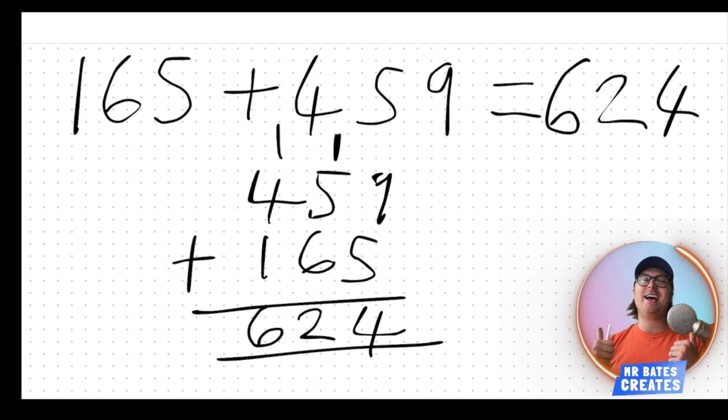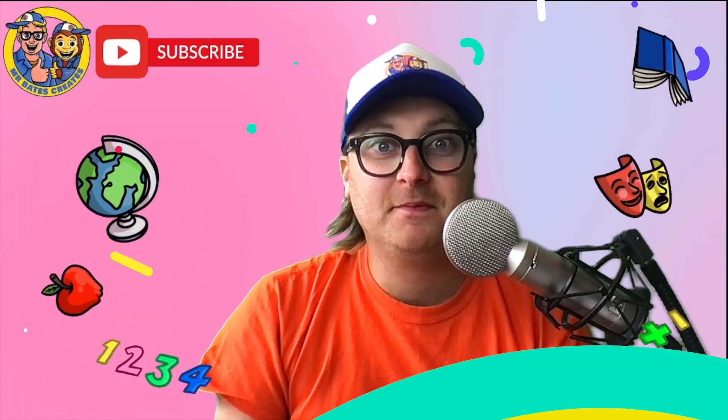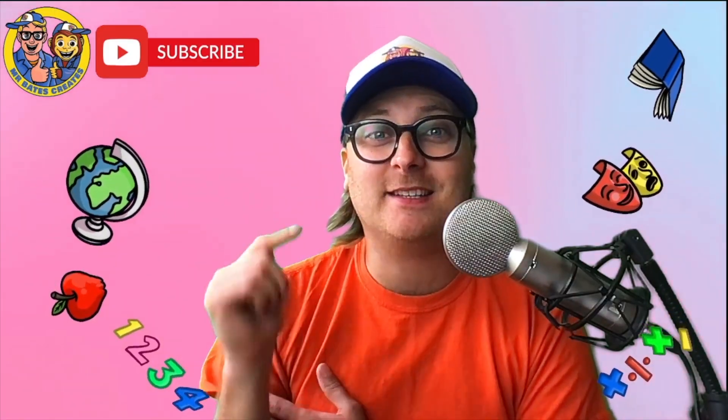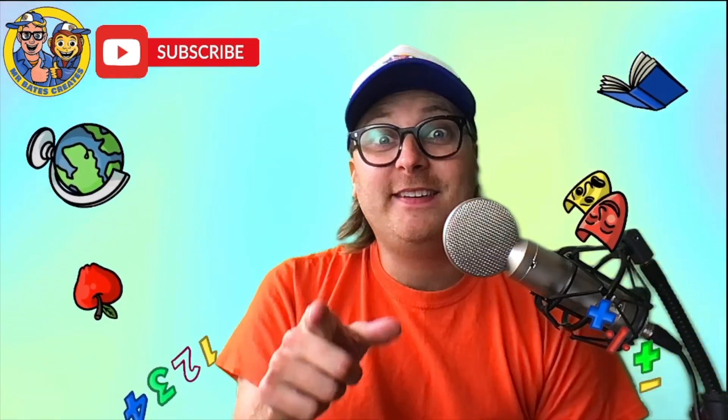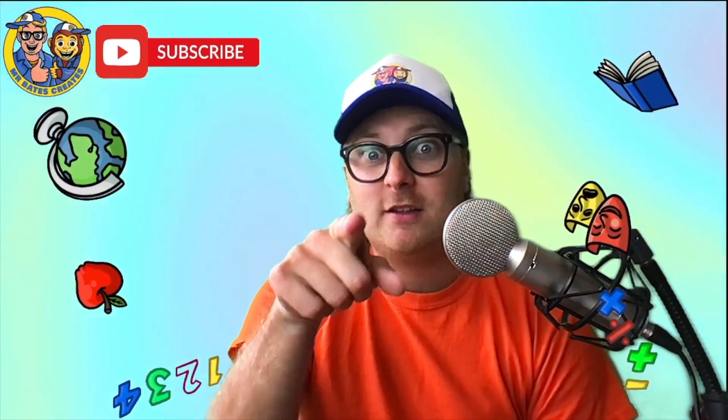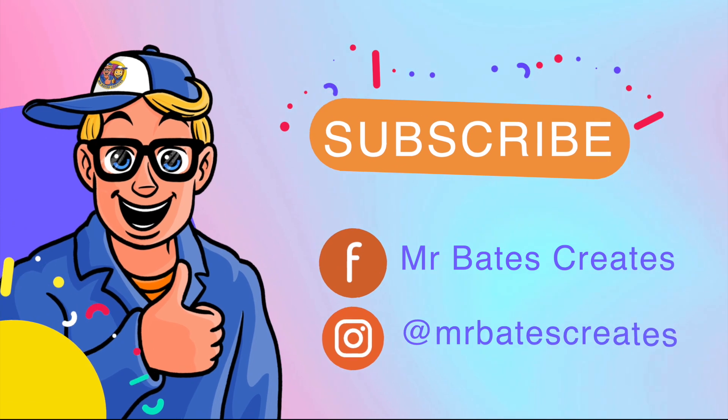Brilliant. Give yourself a big marshmallow clap. Hey, fantastic stuff. You did it. That was compact column addition. Mr. Monkey, how did we get on? I thought we did pretty good there. Hey, we'll see you here next time on Mr. Bates Creates. Don't forget, click that like and subscribe button so you get updated when we put a new lesson up. We'll see you soon. Take care. Look after yourself. Bye.